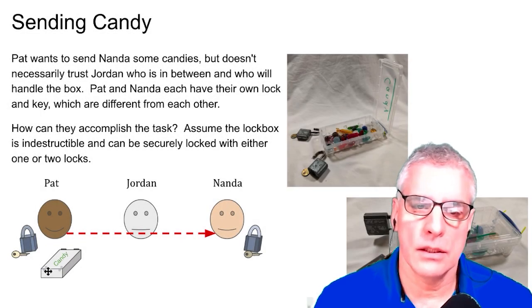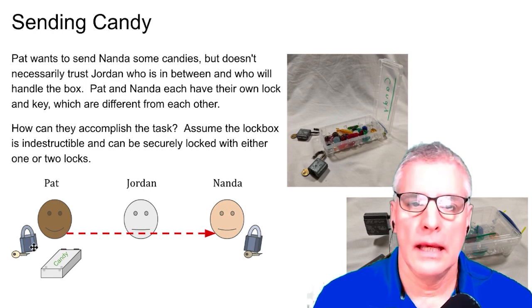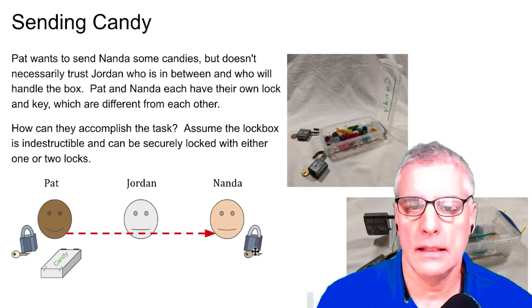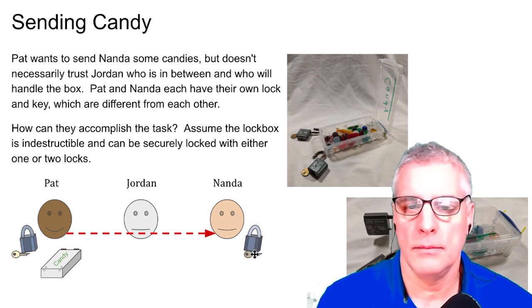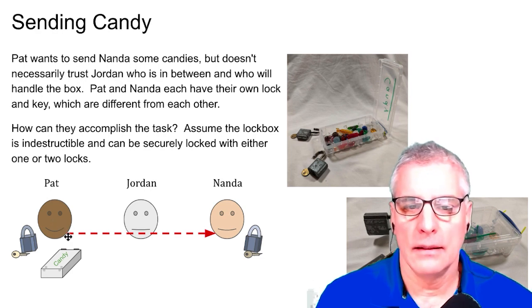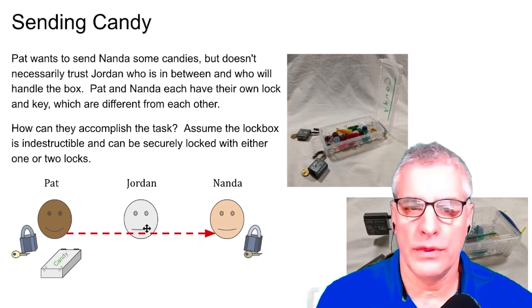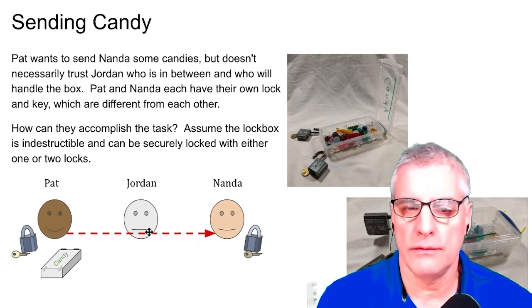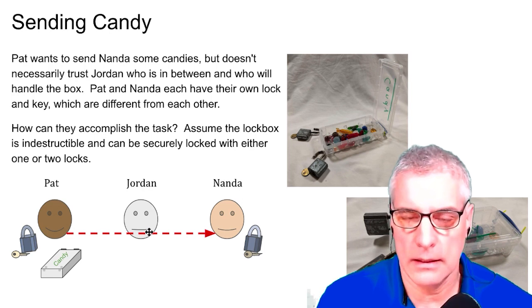There's a container, a secure, let's say, unbreakable container. And Pat has a key and a lock. And Nanda also has a key and a lock. And these keys, these are not the same. They're different from each other. So, then Pat, how would Pat get this candy and securely be able to pass it to Nanda without Jordan in the middle, who handles it every time, having access to the candy?